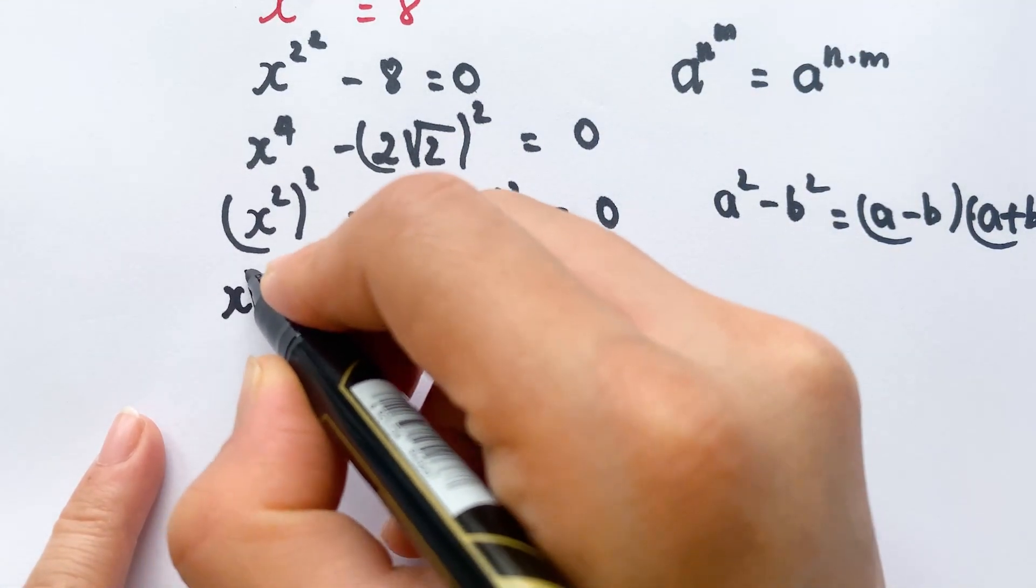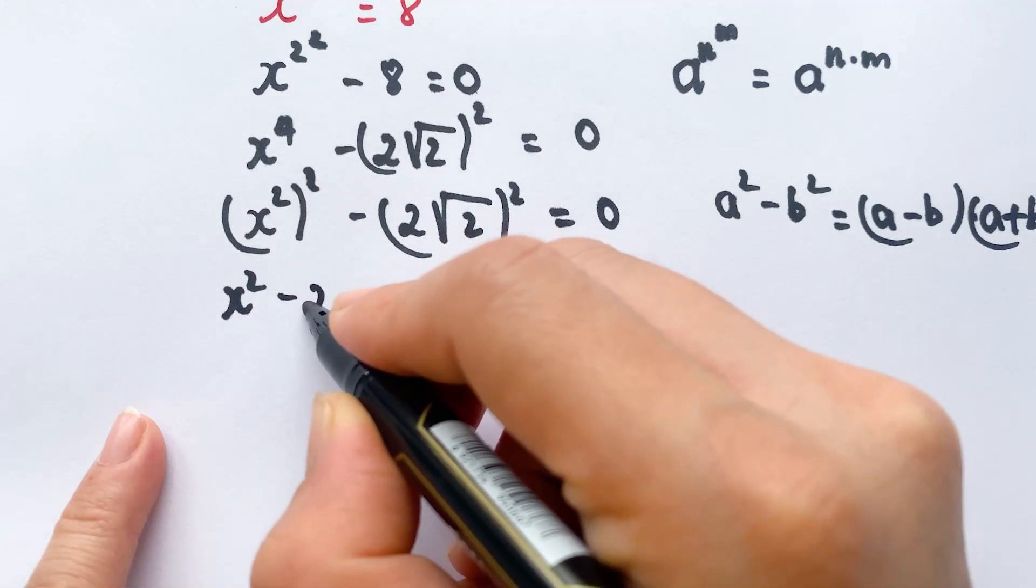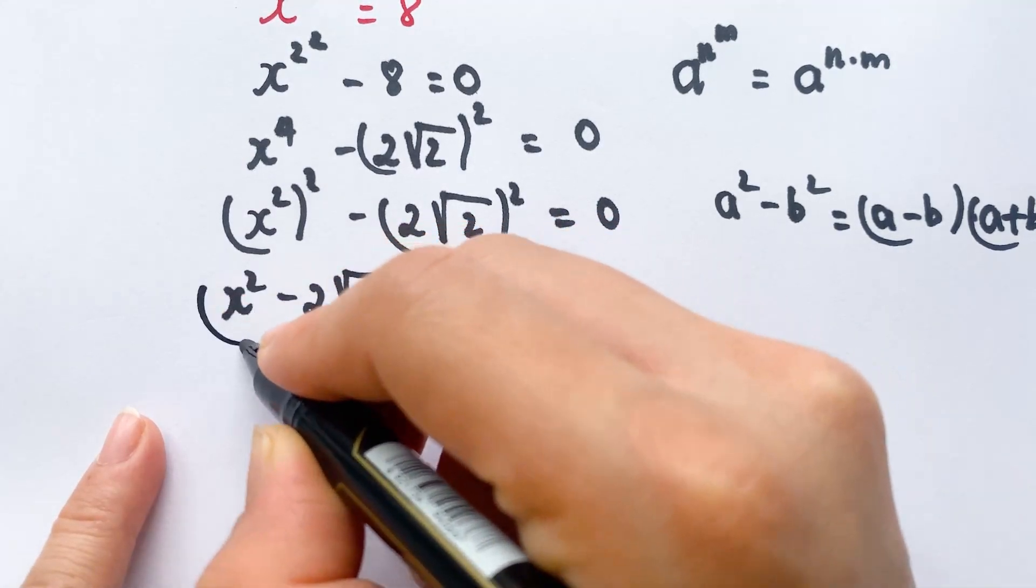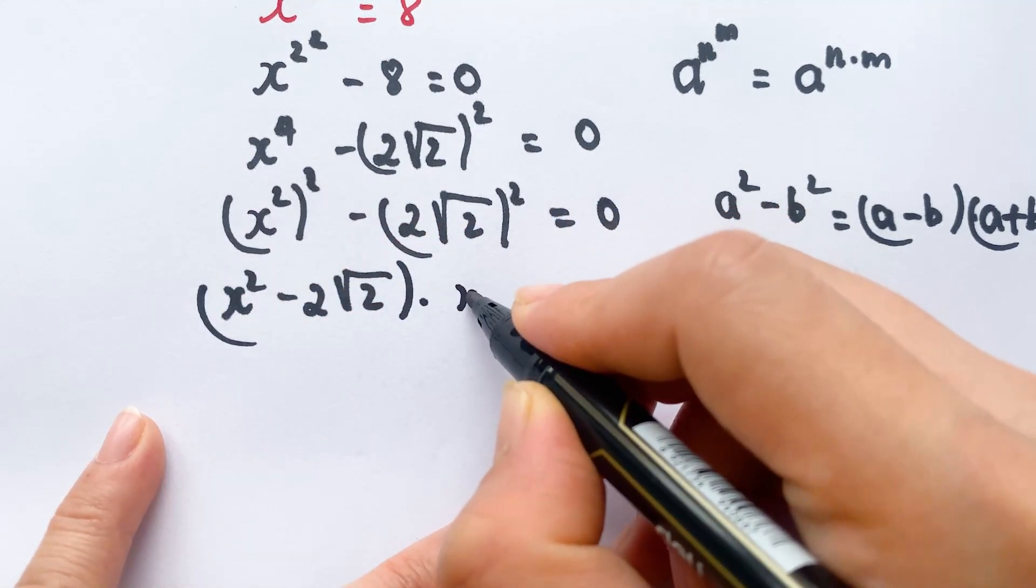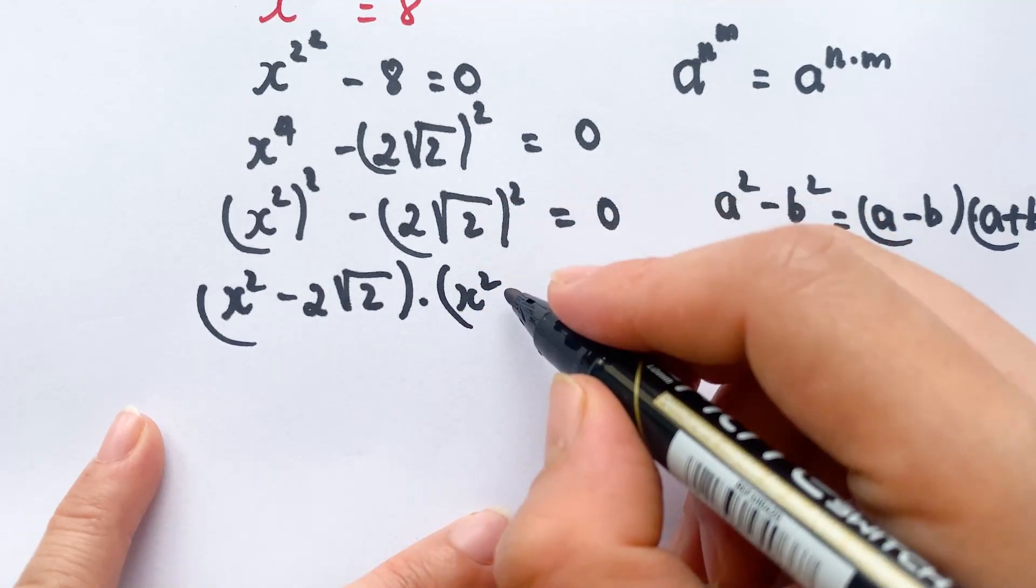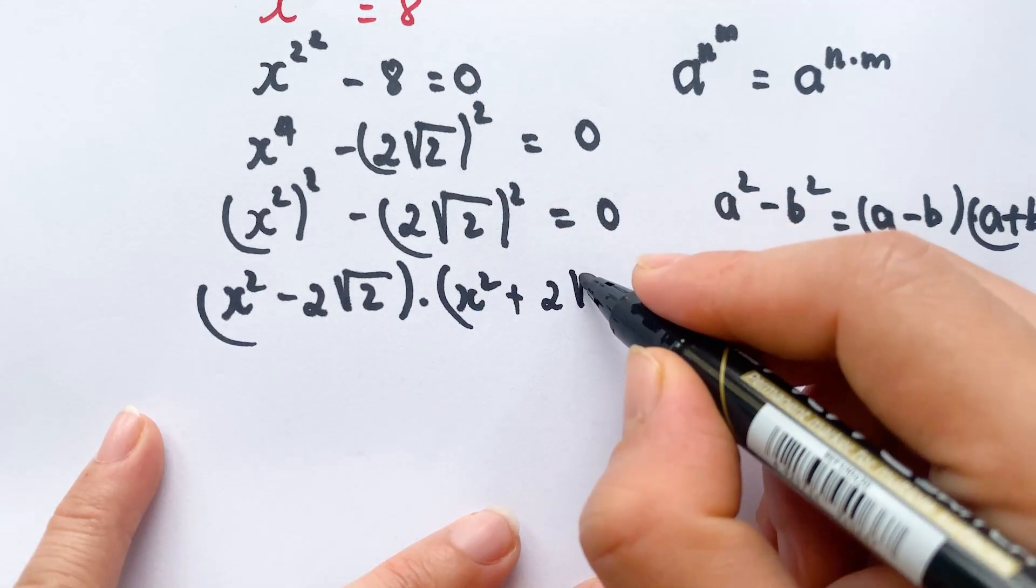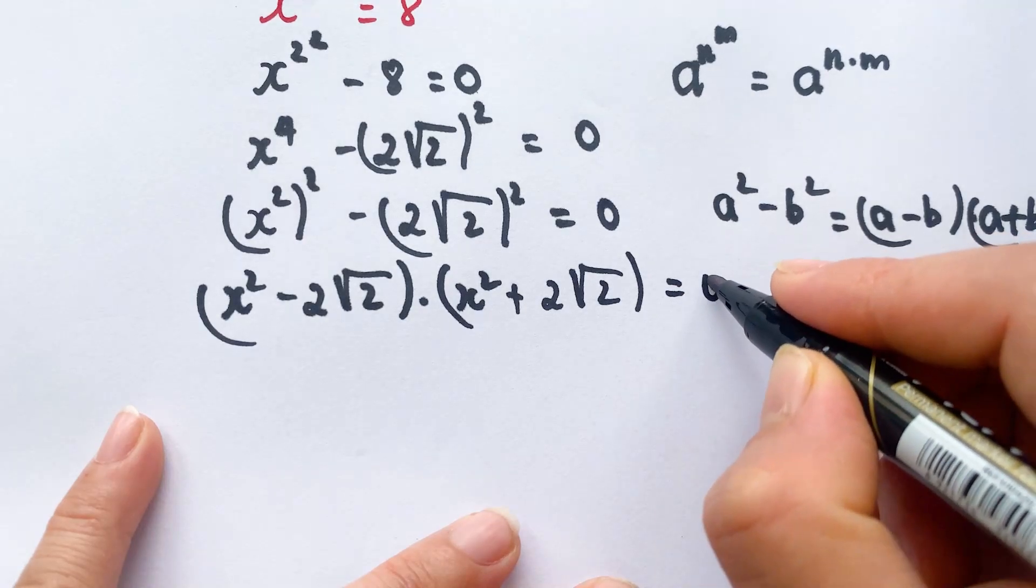So we can say (x^2 - 2√2)(x^2 + 2√2) = 0.